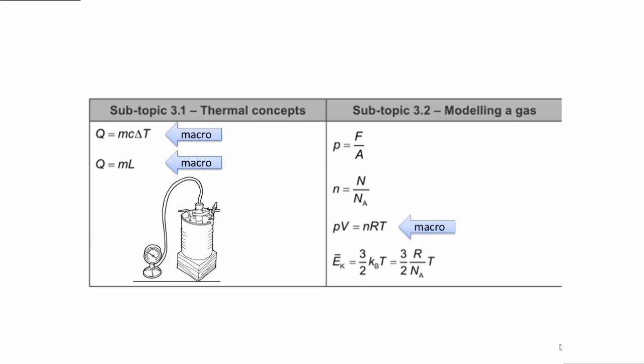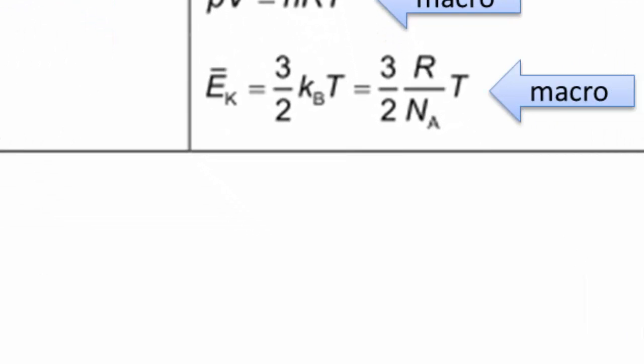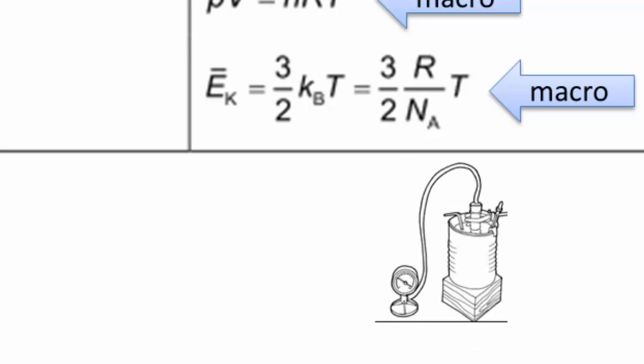Now the equation that we're looking at, the Maxwell Boltzmann equation, is also macro which means it's looking at temperature for example. But on the other hand it also has microscopic properties. The kinetic energy there is the average kinetic energy of the particles of the gas. And we can't measure those directly.